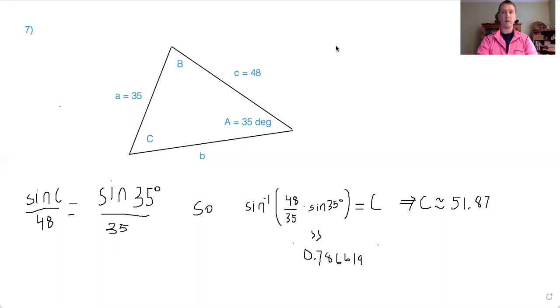All right, so good morning. I had a question about this problem from section 6.5, I believe it's number seven, where you're asked, given a side-side-angle set of information, to find all the possible triangles. The student that asked had this set of sides, 35, 48 for A and C, and the angle 35 degrees for A.